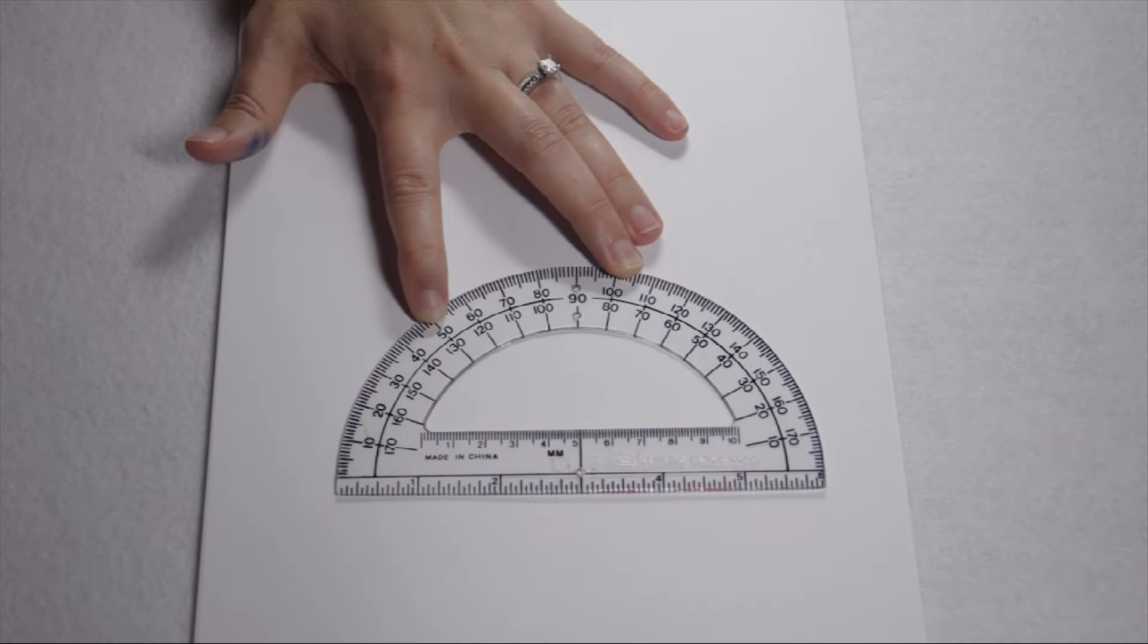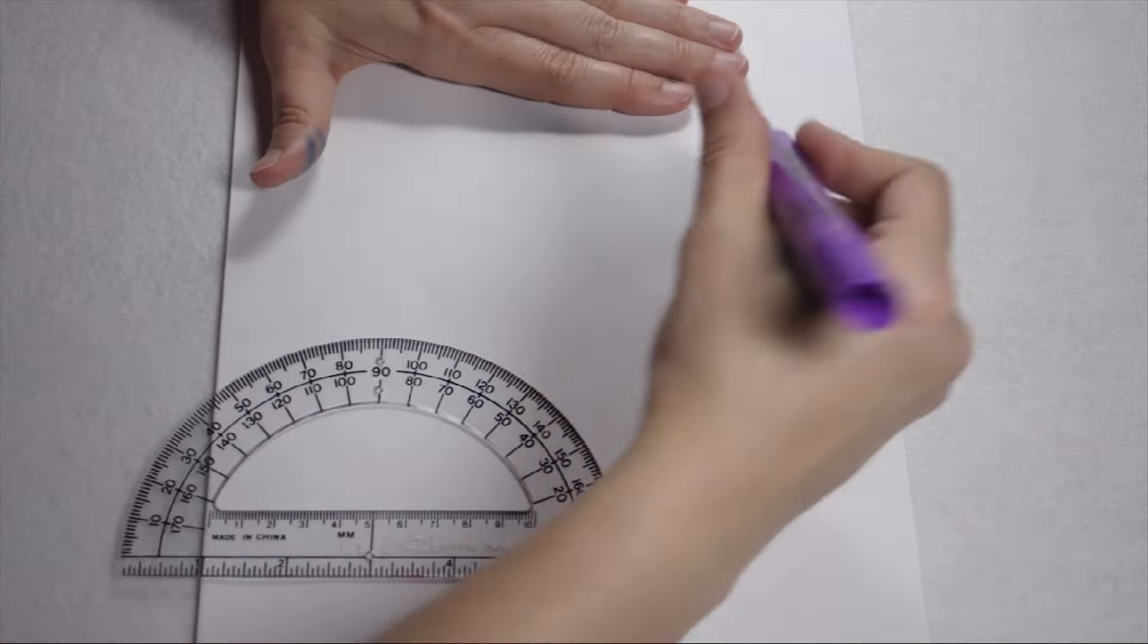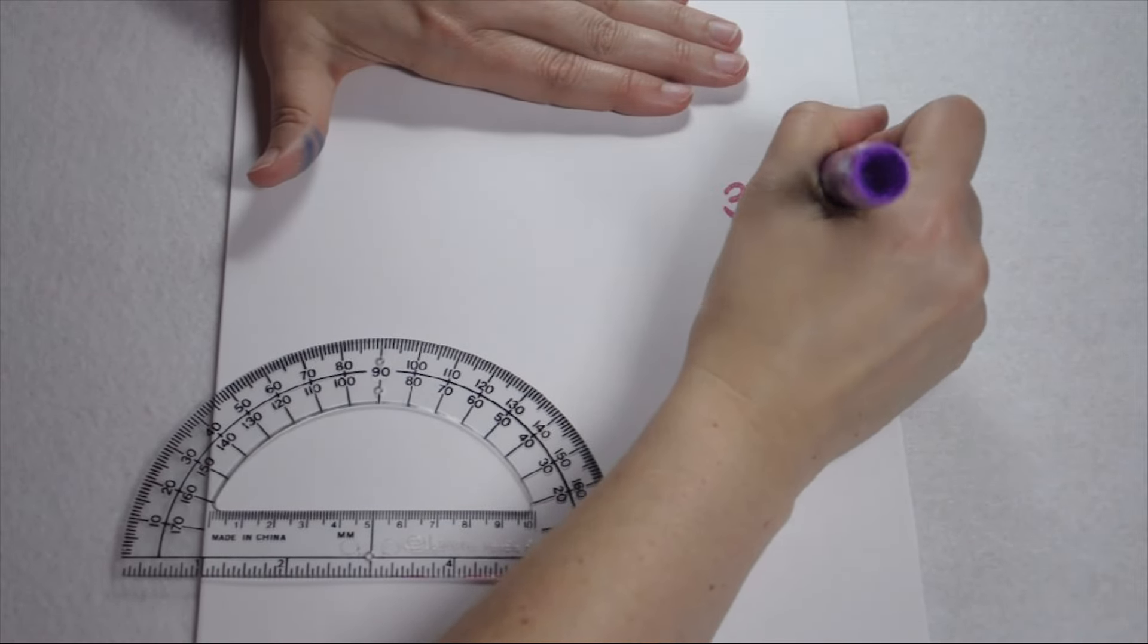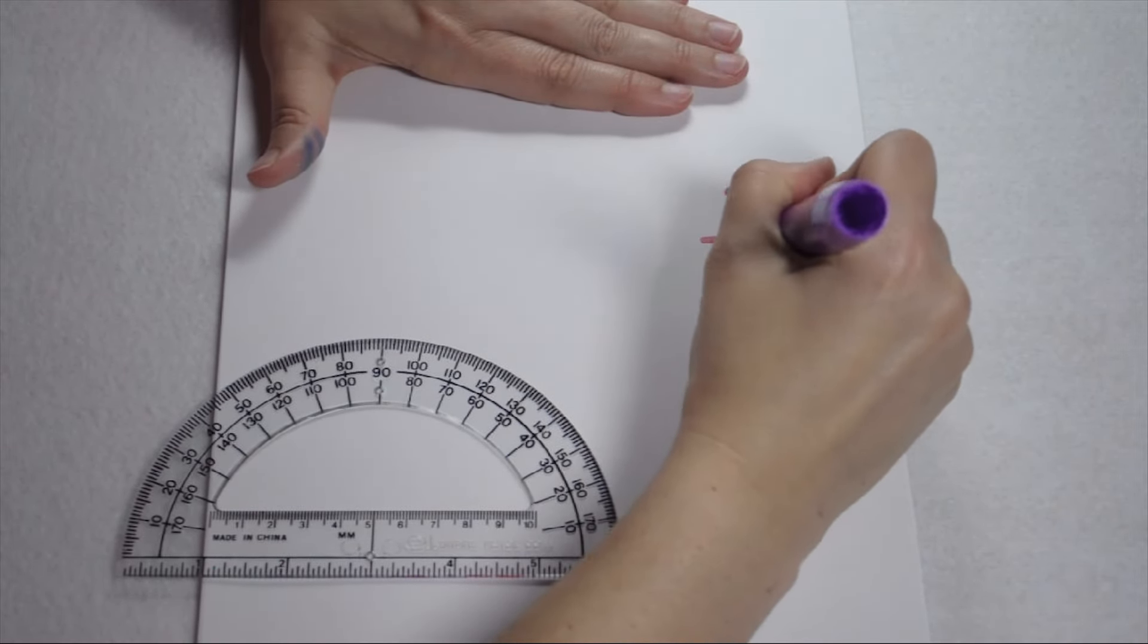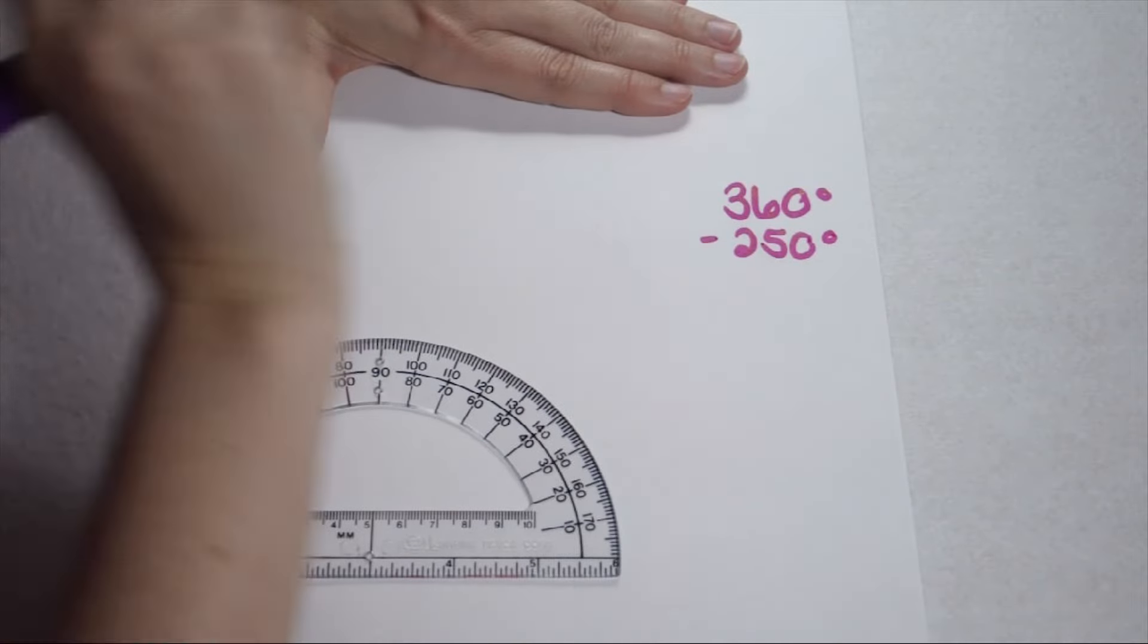So, that's where we're going to start, by taking our 360 degree circle and subtracting the 250 degree reflex angle we're trying to draw.